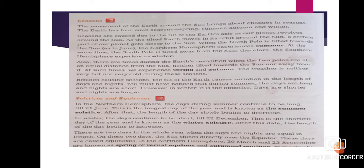The movement of Earth around the sun brings about changes in seasons. Due to rotation of Earth we are able to see day and night, and because of revolution of Earth we are able to get changes in seasons — that is the four main seasons: summer, autumn, winter, and spring.